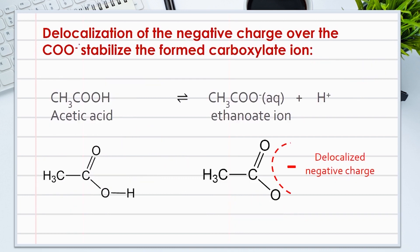Another factor that makes carboxylic compounds stronger acids is the ability to stabilize the carboxylate ion. The delocalization of the negative charge over the COO⁻ group makes the carboxylate ion more stable and less likely to bind back to hydrogen to reform the acid molecule.